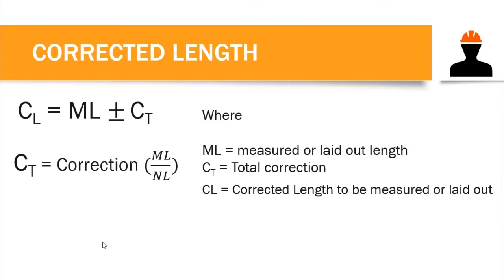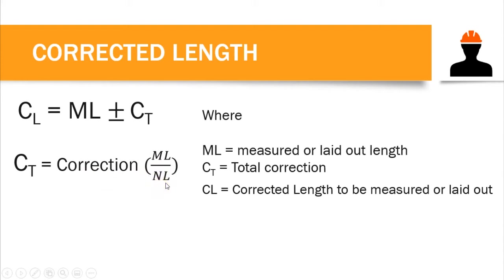In order to compute the corrected length, we have this equation. You do not need to memorize this — just familiarize how it is being developed. Corrected length (CL) is equal to ML, the measured or laid out length, and you can either subtract or add the total correction. Total correction is basically equal to the unit correction times the measured length over the nominal length. The nominal length is the standard length of a tape — it could either be a 50-meter tape or a 100-meter tape, depending on the type of tape.